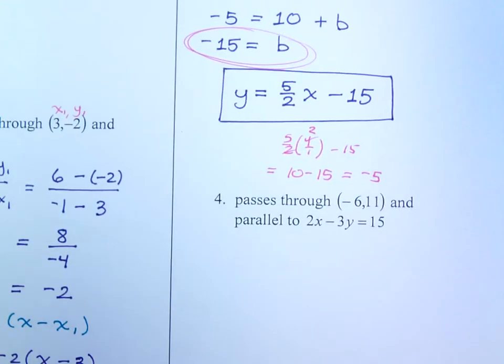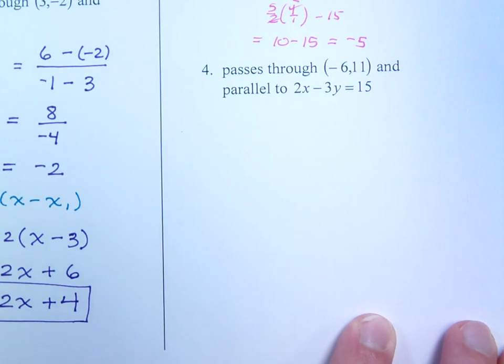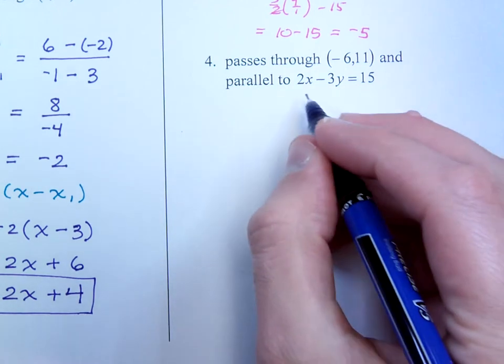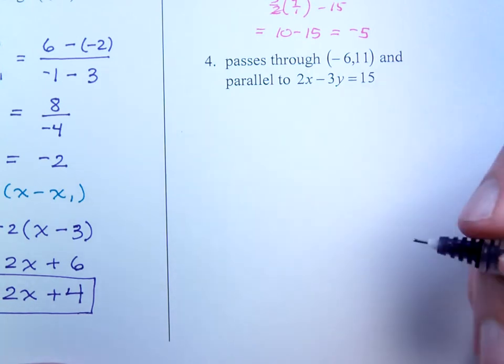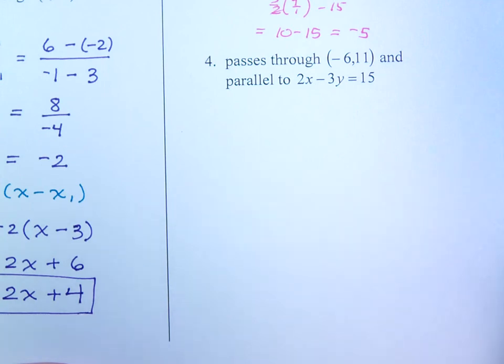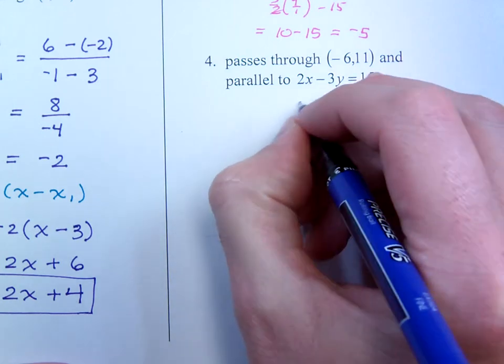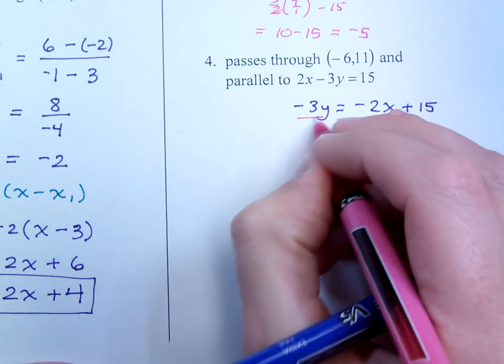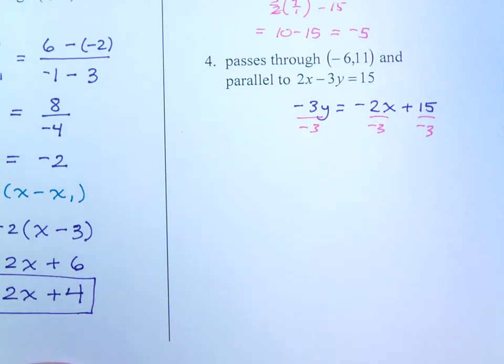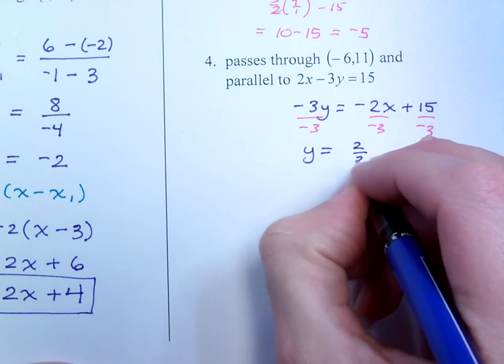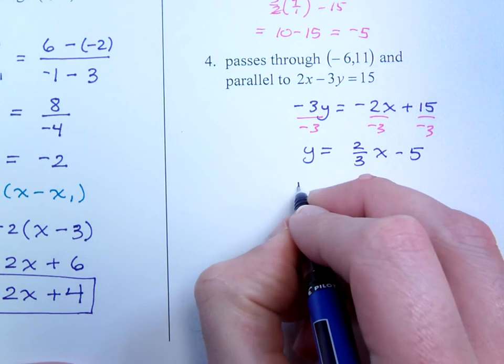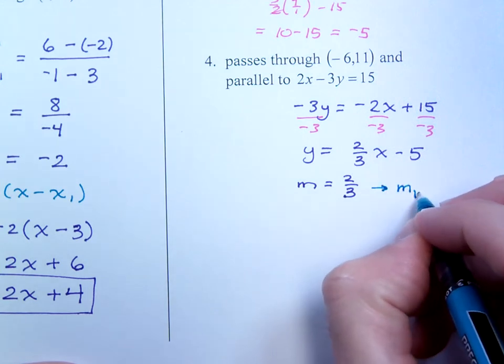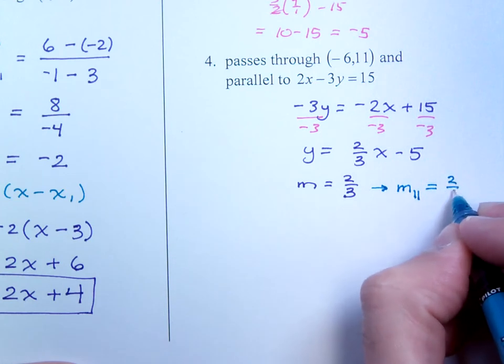And number 4 says, I want to be passing through this point and parallel to this guy. To be parallel means you have to have the same slope. There's a shortcut way of doing this if we want to keep things in standard form, but the instructions say to go to slope-intercept form. Solve this guy for y. Negative 3y equals negative 2x plus 15. And when I divide everything by negative 3, that will finish putting this original equation into slope-intercept form. The reason I want that is because I want to be able to identify this slope here, which is 2 thirds. And if I know that slope is 2 thirds, then I know what the slope of a line parallel to that has to be, which is 2 thirds.